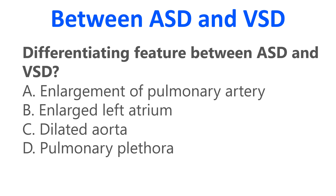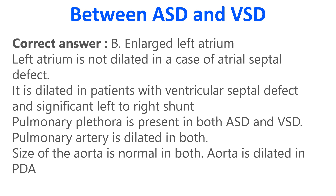Differentiating feature between ASD and VSD: A. Enlargement of pulmonary artery. B. Enlarged left atrium. C. Dilated aorta. D. Pulmonary plethora. Correct answer is B: Enlarged left atrium. The left atrium is not dilated in atrial septal defect, but is dilated in patients with ventricular septal defect with significant left to right shunt. Pulmonary plethora and dilated pulmonary artery are present in both ASD and VSD. The aorta is normal in both, but dilated in PDA.